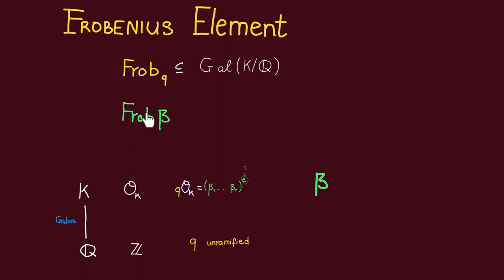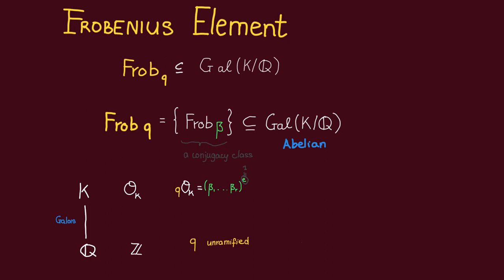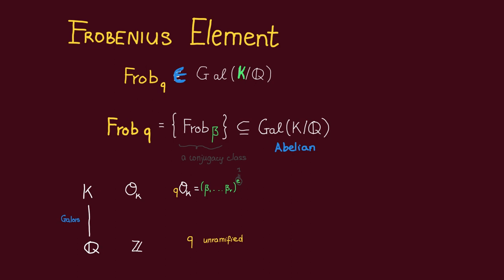That is the definition for the Frobenius of beta, where beta is some prime lying above q. For the definition of Frobenius of q, we define it to be the set of all Frobenius beta, where beta runs over all primes lying above q. This turns out to be a conjugacy class in the Galois group, because if beta and beta prime both lie above q, then their corresponding Frobenius elements are conjugates. In the particular case when the Galois group is abelian, this conjugacy class consists of only one element, so we can view this Frobenius as an element of the Galois group of K over Q. To be more precise, we should denote this Frobenius element as Frob_{q,K}, since it depends on K.